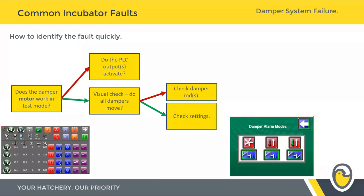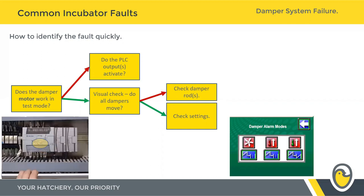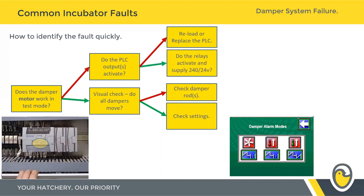Back to the test mode: if hitting test mode shows the damper physically doesn't move, we're back to checking the PLC outputs. On a Gen 3 control, check the little LED lights at the top of the digital output card, put a multimeter across the output and check for 24 volts. On a Gen 4 incubator, the digital outputs are the bottom row of lights and the digital inputs are the top row. If the outputs don't activate, first reload the PLC using the on-site memory cassette. If that doesn't work, replace the PLC. If the outputs do work, check the 24 volts is supplying the relays and then check the relays are supplying the required 240 or 24 volts out to the damper.